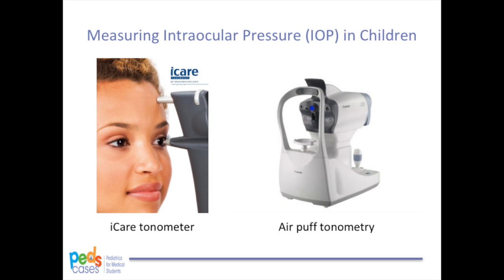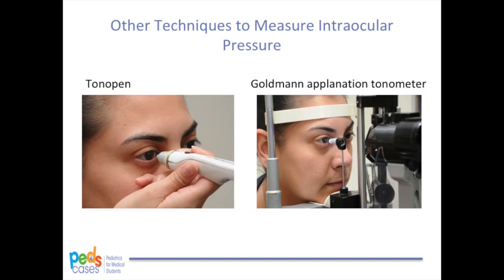Air puff tonometry is also a good option if available in the office since it does not directly touch the eye. Other methods include handheld applanation tonometry, known by the brand name Tono-Pen, and the Goldmann applanation tonometer. These two methods are more commonly used in adults. The Goldmann applanation tonometer is the most accurate and is the gold standard for IOP measurements; however, it is more technically challenging and requires a slit lamp. If you need to hold the eyelids open for any of these techniques, be careful to push only on the orbital bones rather than the eye itself, as this can artificially elevate pressures.